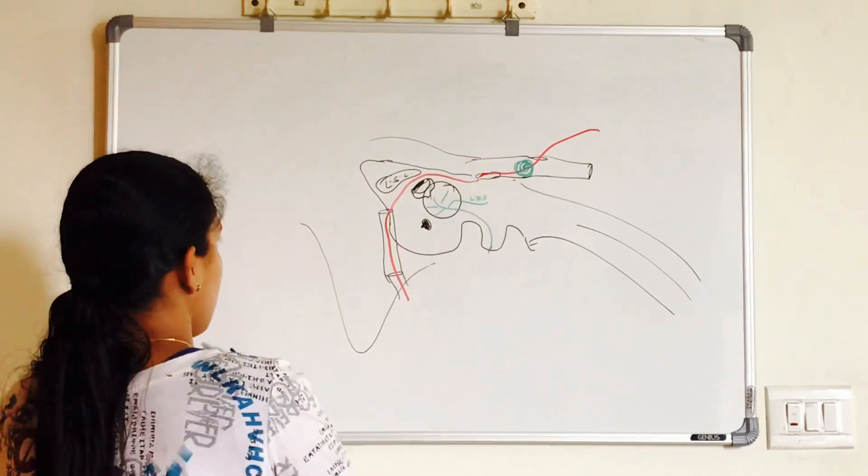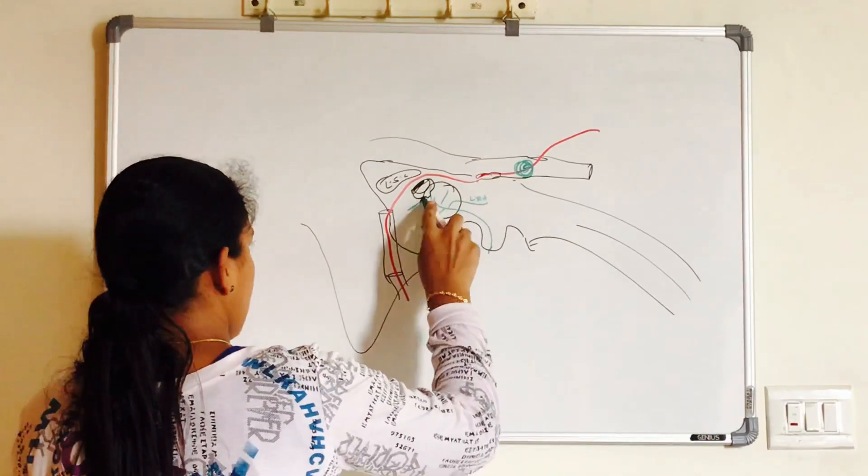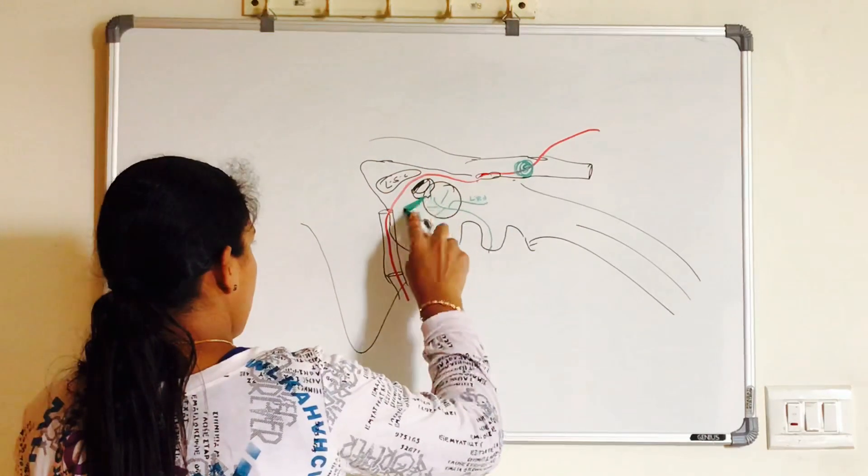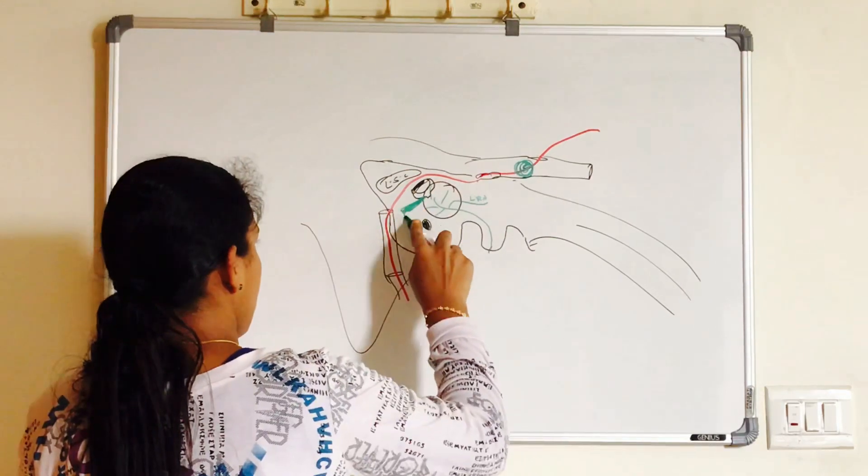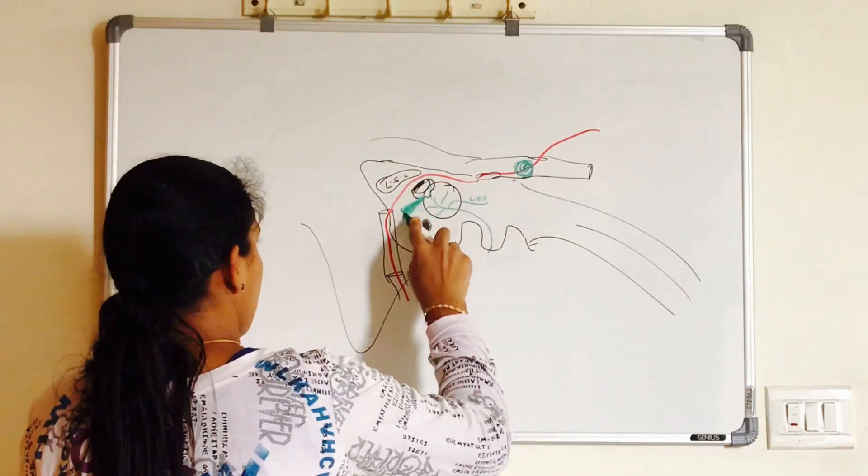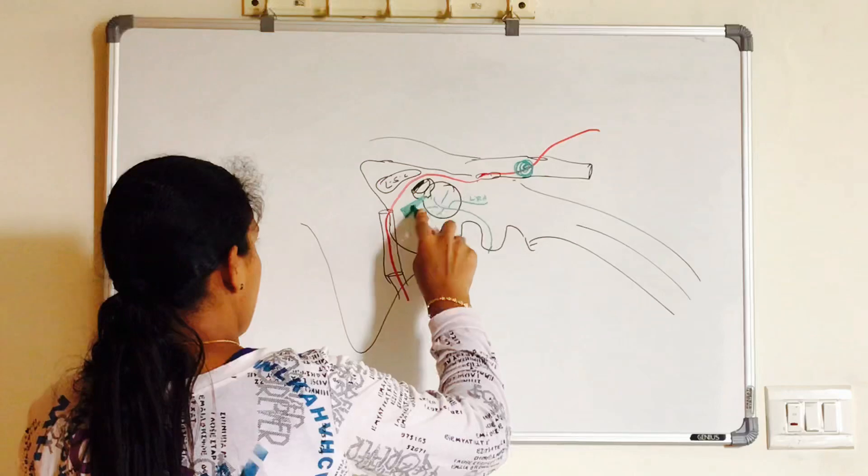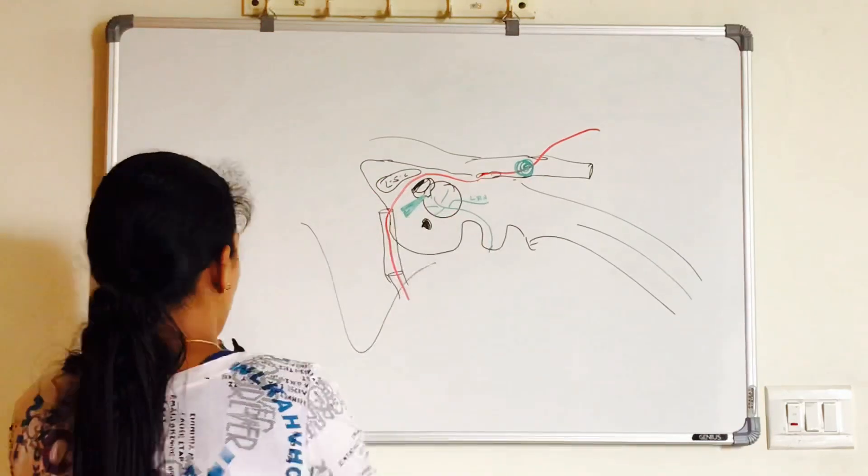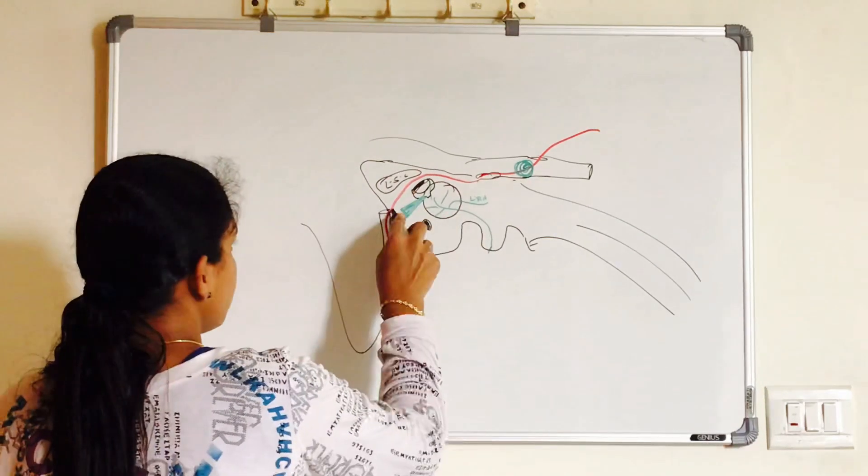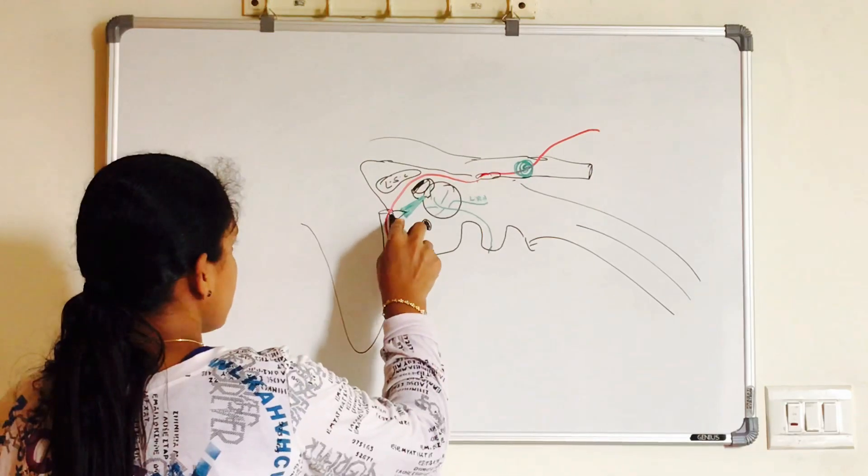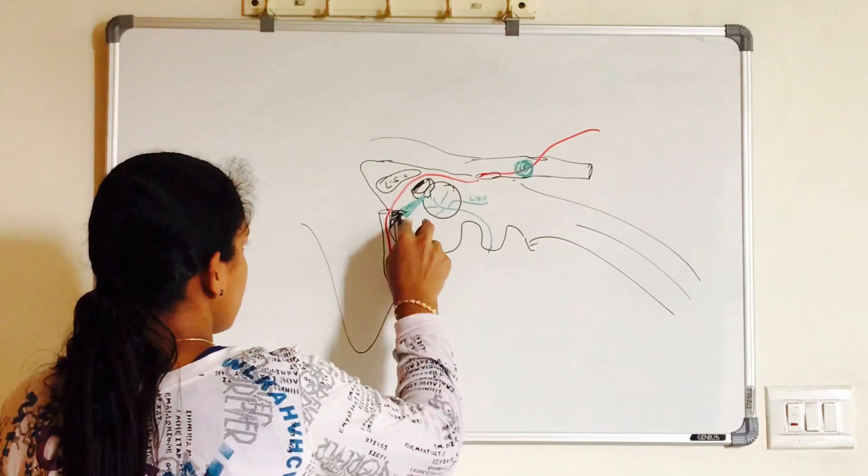Now, what is attached to the oval window? Yes, that is foot plate of stapes. Now, you can see a muscle which is attached to neck of the stapes. What is that muscle called as? Stapedius. Facial nerve supplies muscles of second branchial arch. Stapedius develops from the second branchial arch.